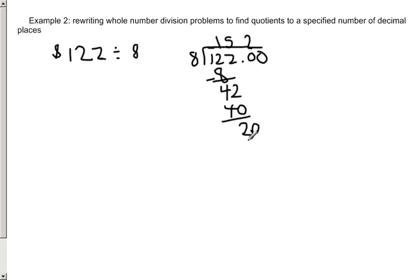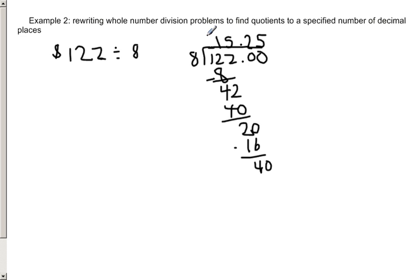2 times 8 is 16. I subtract and bring down my final digit, 0. How many 8s in 40? 5. Because we said this is dollars and cents, my decimal point goes right there. $15.25. So $122 divided eight ways would be $15.25. I can put my dollar sign right there. So I rewrote my problem as a whole number with a decimal to find the answer in dollars and cents.